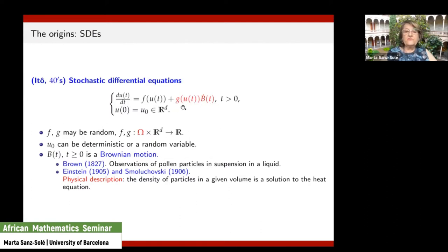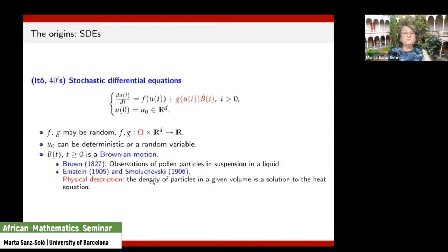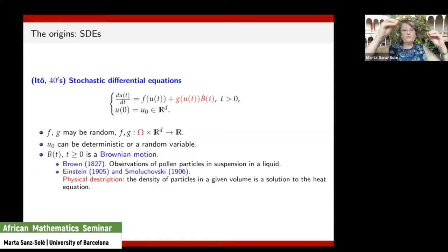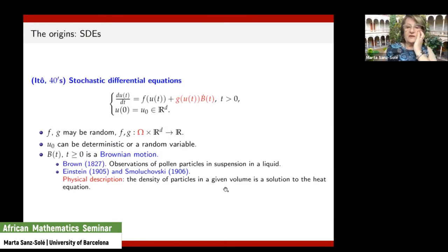Both f and g may be random, though probabilists normally suppress the omega. The important thing is that the external forcing is given by this product. Itô took as noise what is called Brownian motion — the dot means the derivative of Brownian motion. Brownian motion comes from 19th century observations of very erratic trajectories of particles, for example pollen particles in suspension in a liquid. Einstein, simultaneously with Smoluchowski, gave a physical description of Brownian motion — not about its trajectories, but on the density of particles, discovering that the equation for this density is the heat equation.